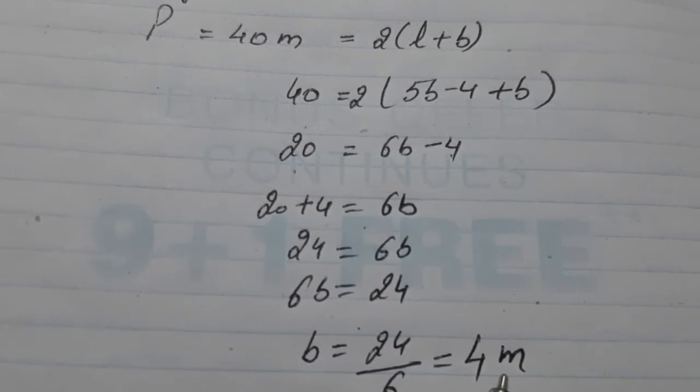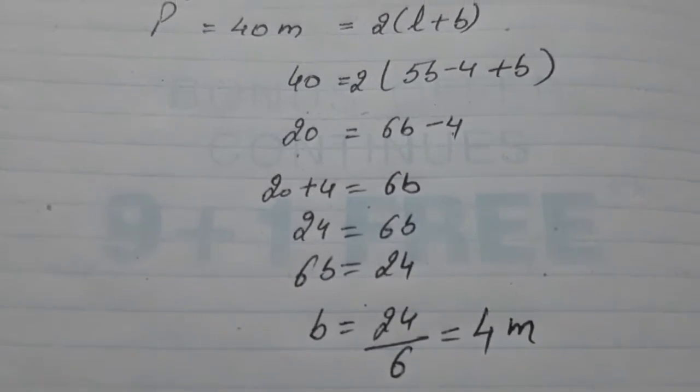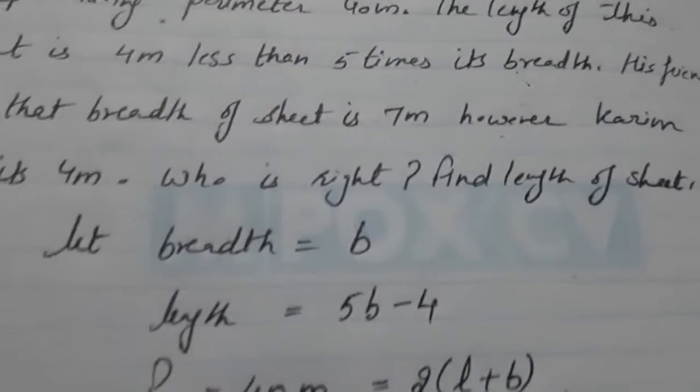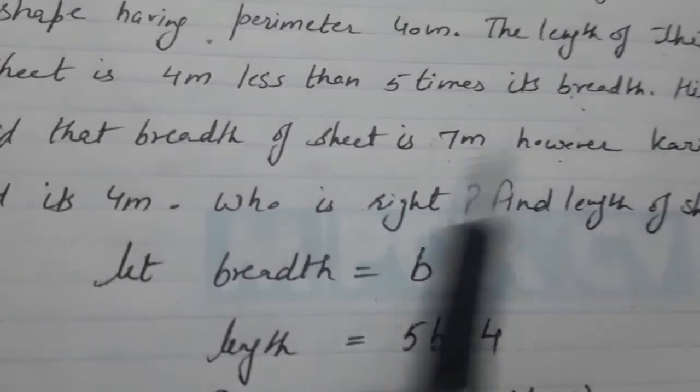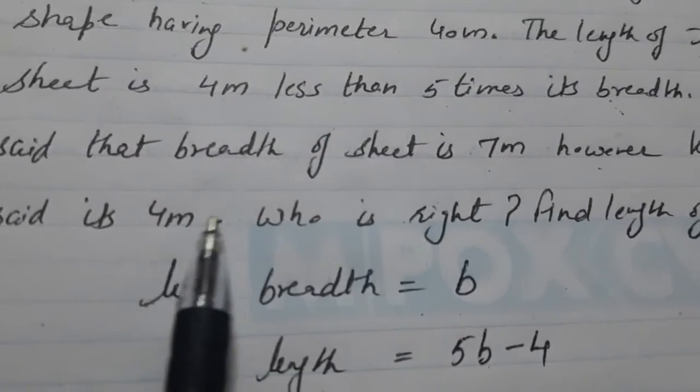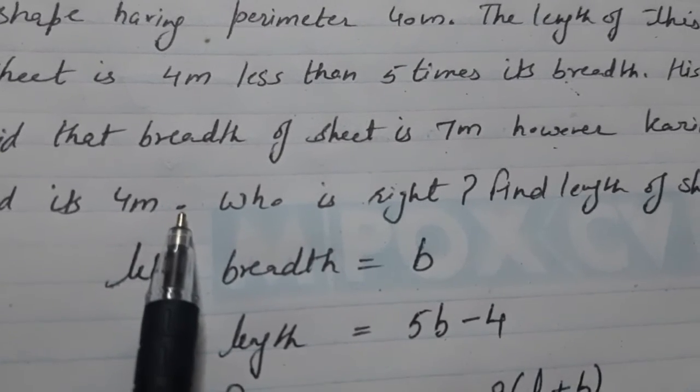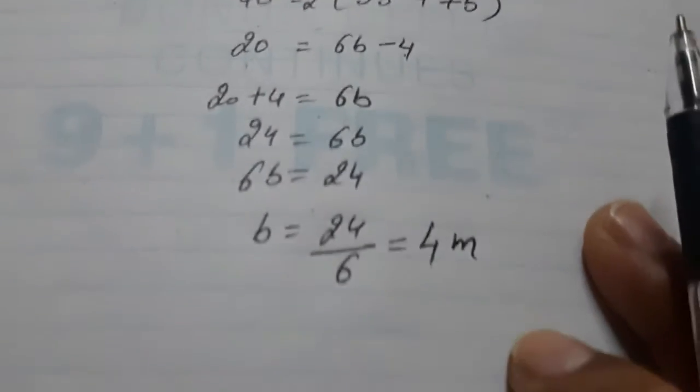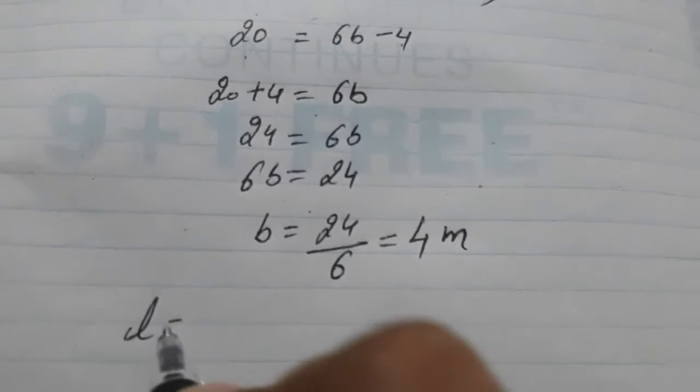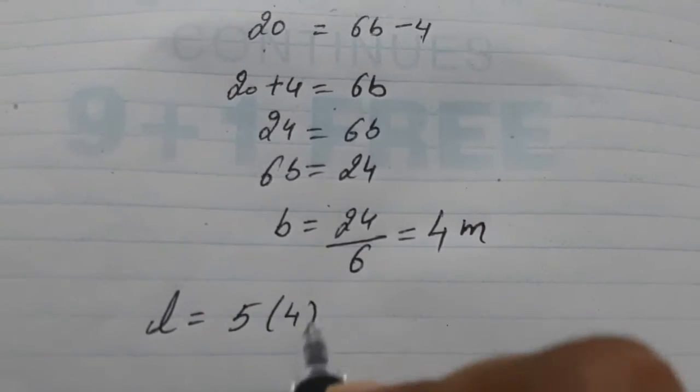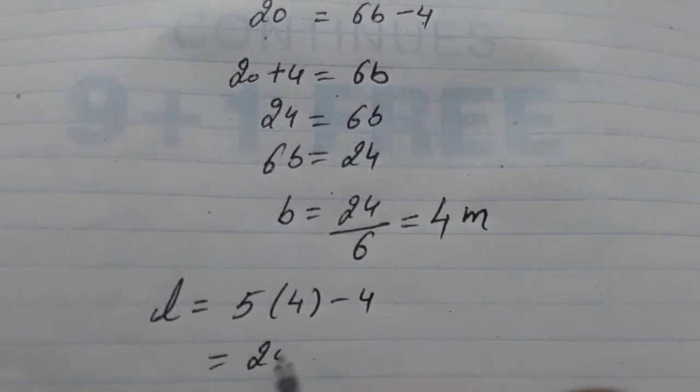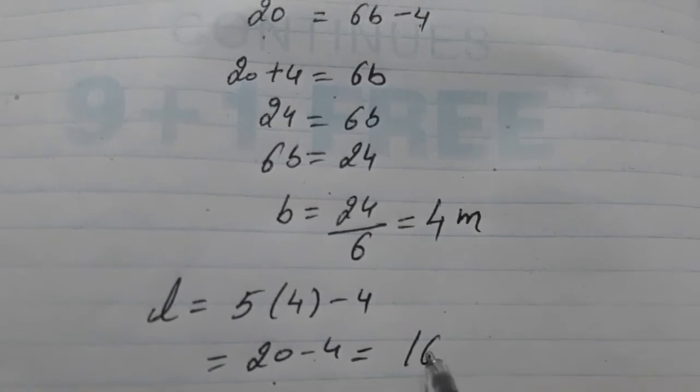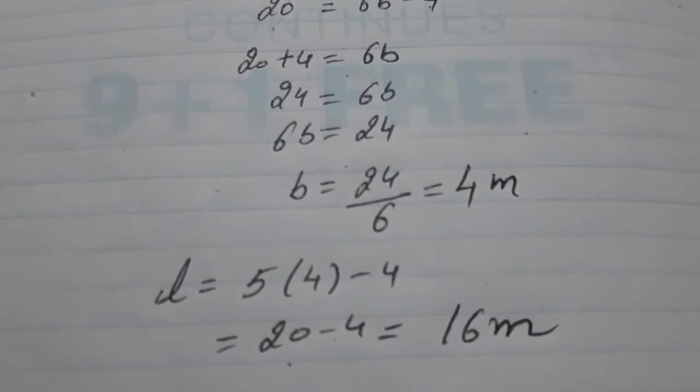So, breadth comes out to be 4 meters. Now, we have found that who is right here. Kareem is right because he said its breadth is 4 meters. Now, we have to find the length. Length is 5B minus 4. 5 into 4 minus 4 that is 20 minus 4 that is 16 meters.